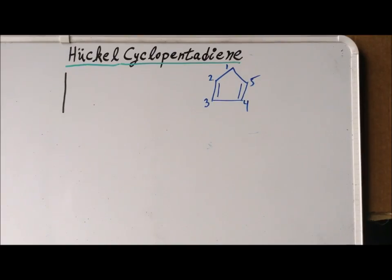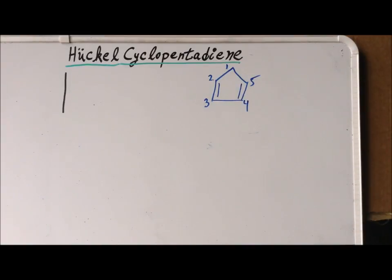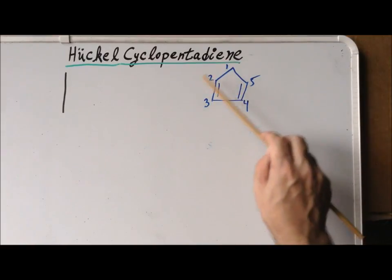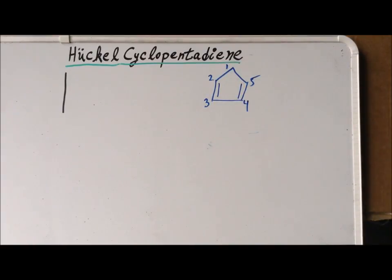Hello. In this video, we are going to calculate the energies of the pi-conjugated system in cyclopentadiene using the Hückel method. Recall that cyclopentadiene is a five-membered cyclic system.